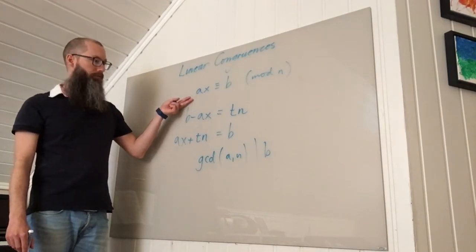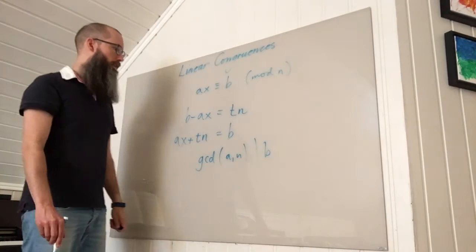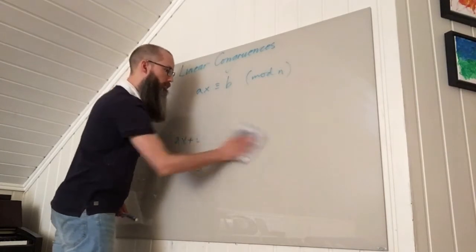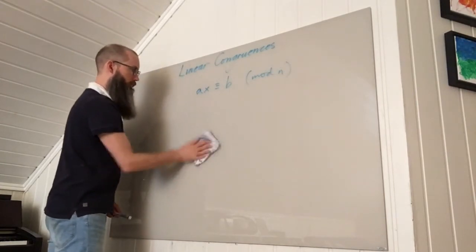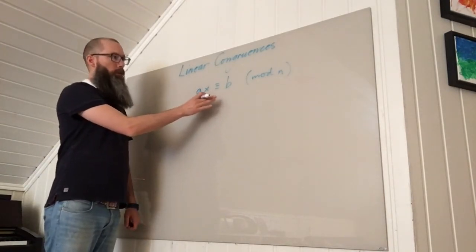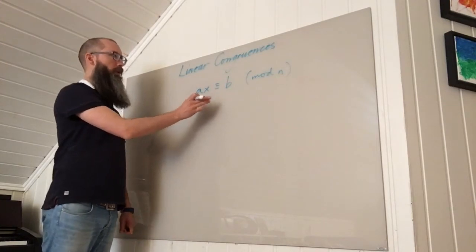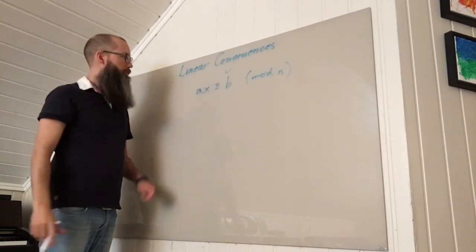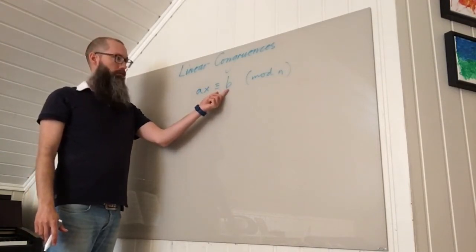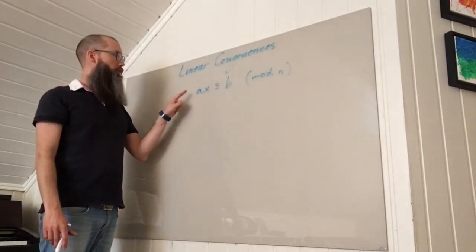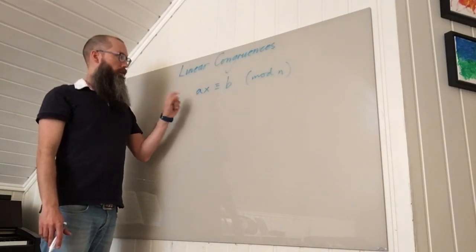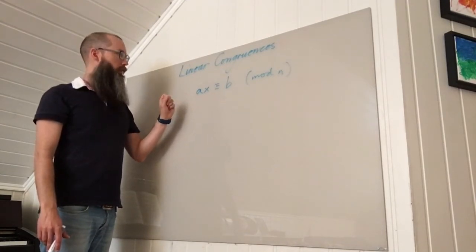So let's assume that solutions exist and see how we can find it. Working with such congruences, we're allowed to do quite a few things without violating the congruence. One of the things we can do is we can replace b by any other number congruent to b modulo n, and we can also replace a by any number congruent to a mod n. We can multiply on both sides with any integer.